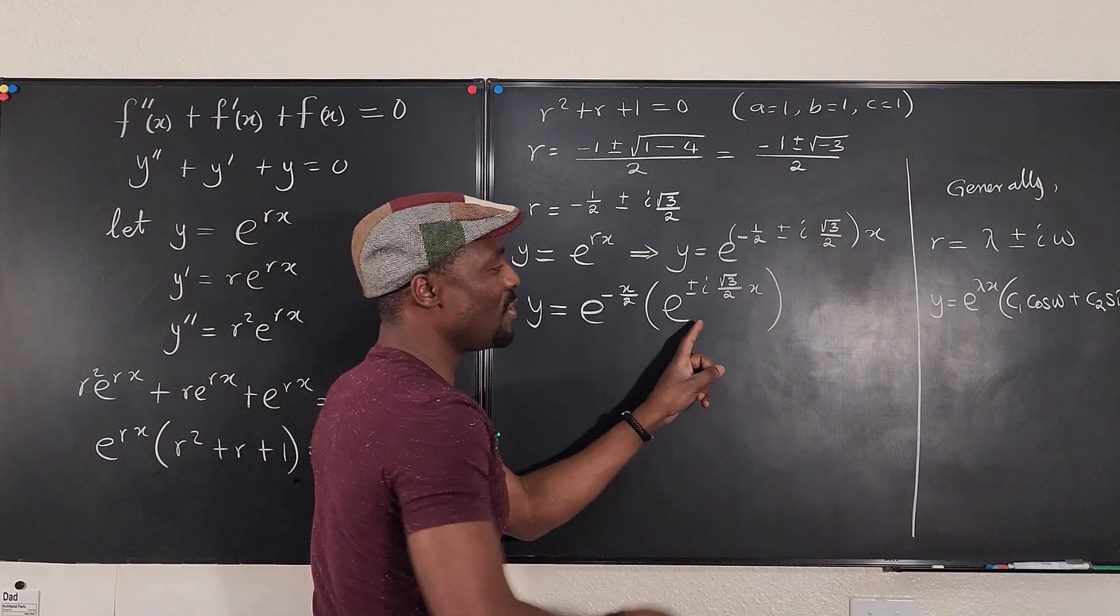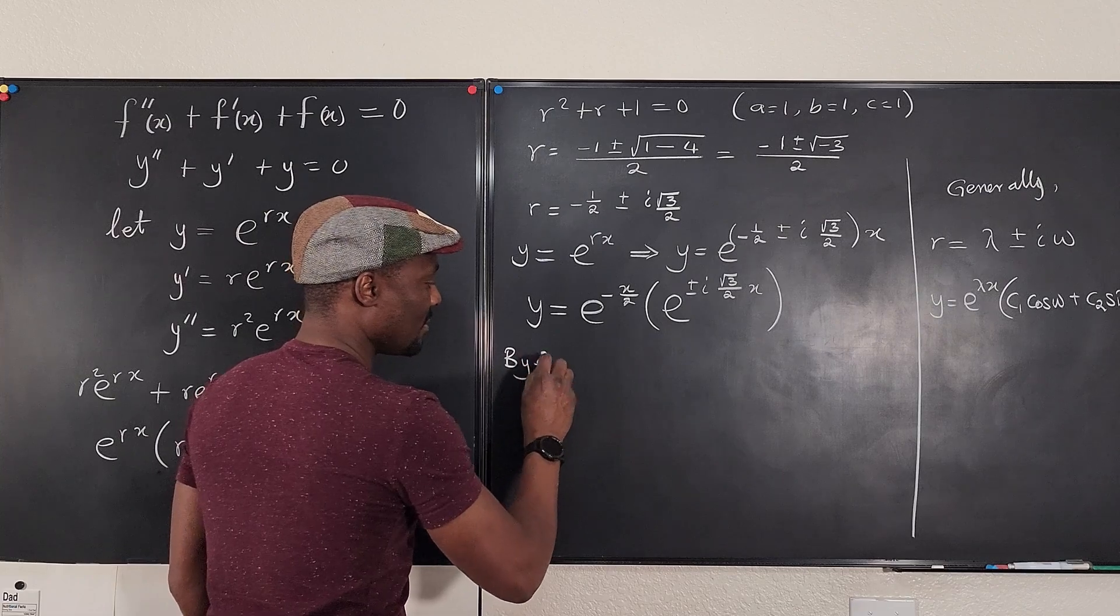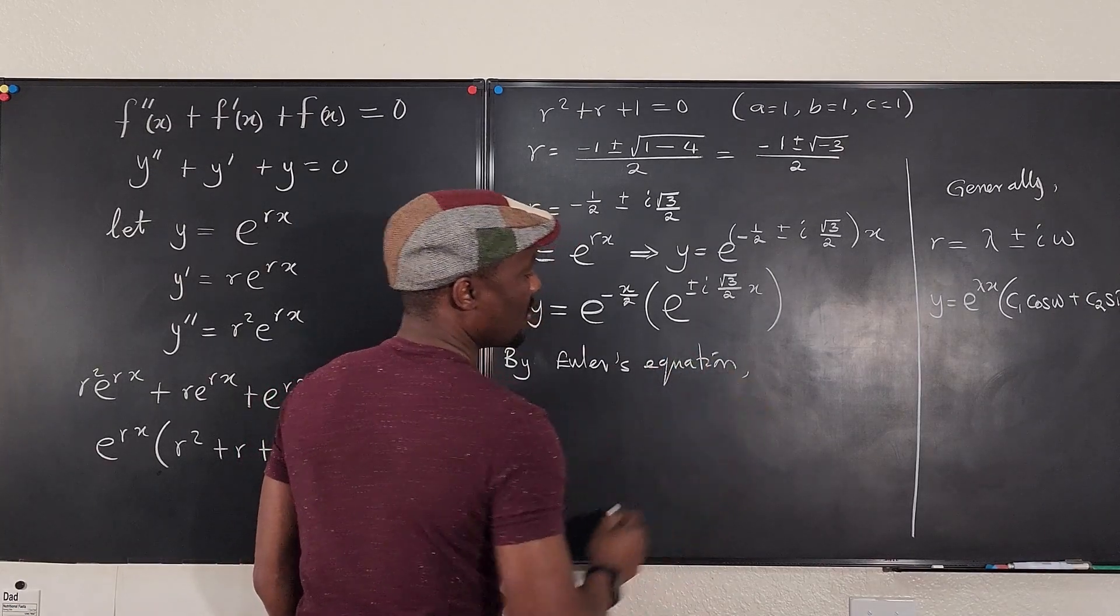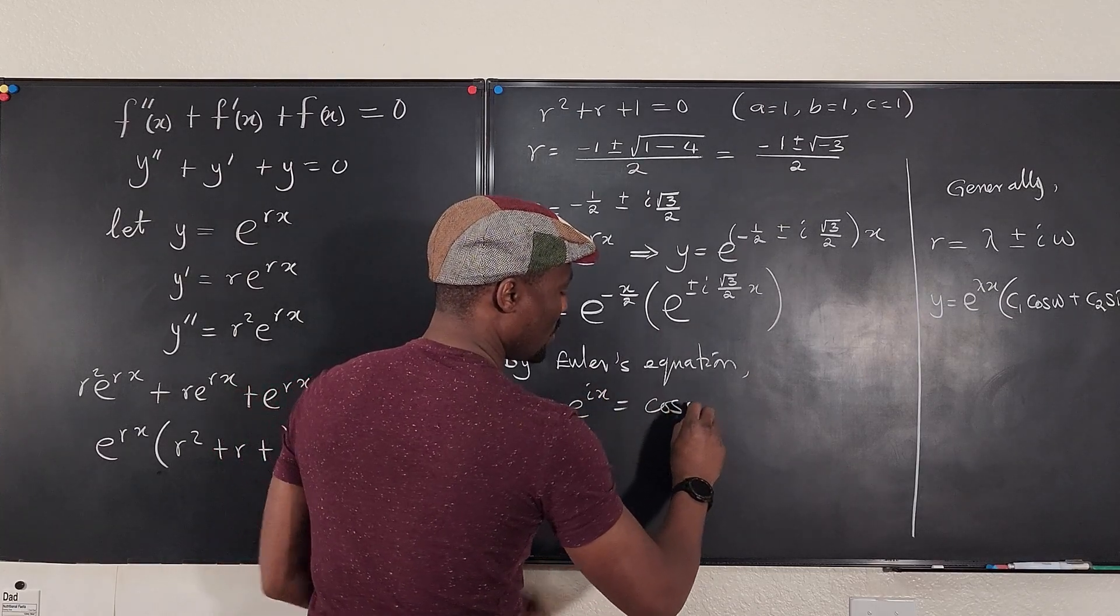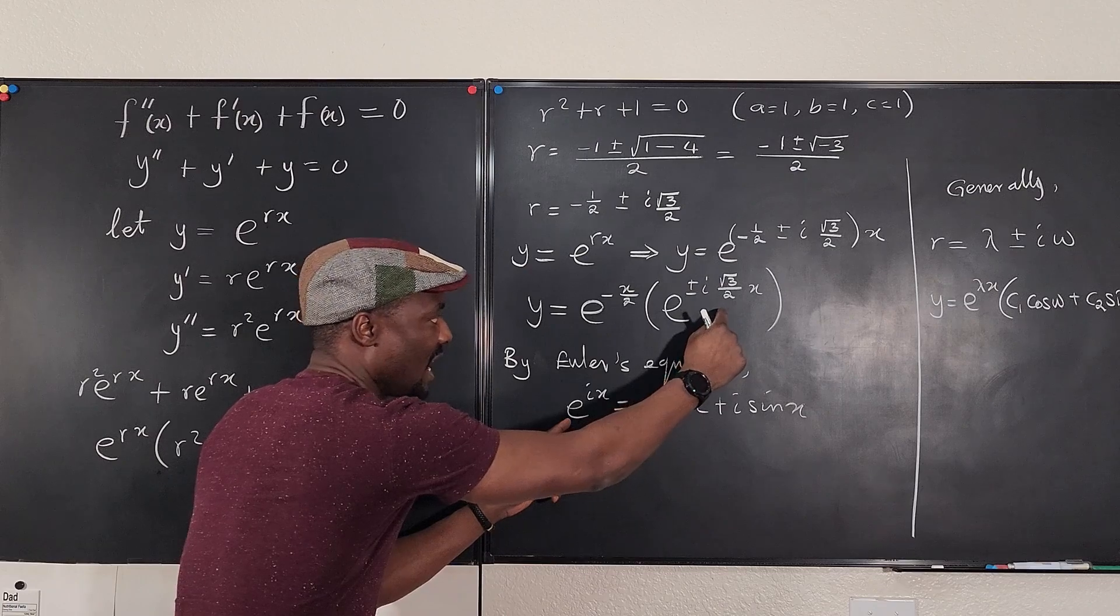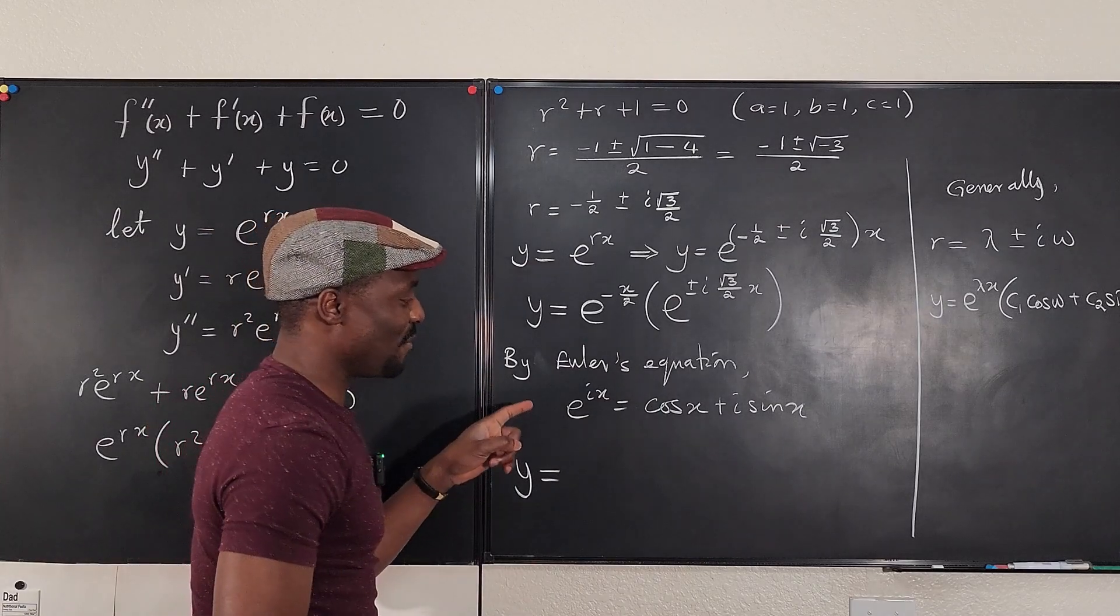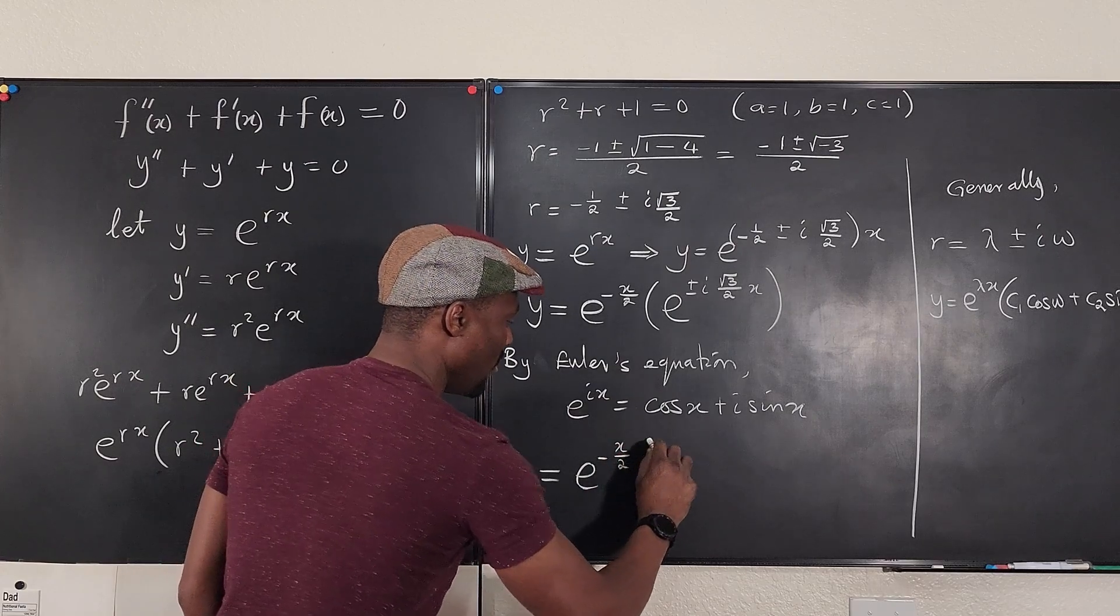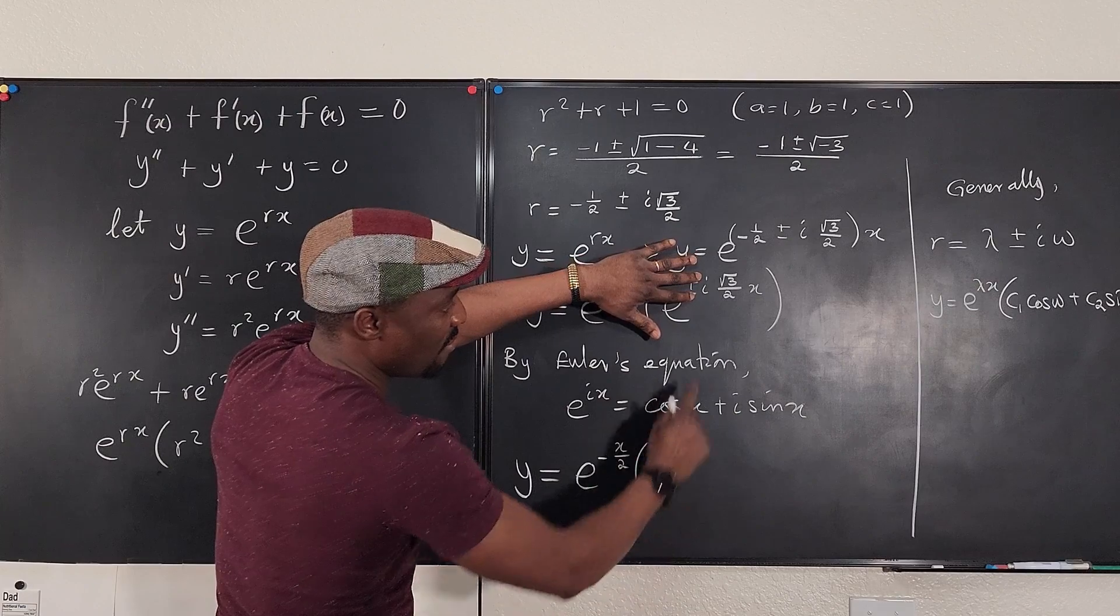And that's what I'm trying to show here. But remember that from Euler's equation, we know by Euler's equation, we know that e to the i x is equal to cosine x plus i sine x. And it is on this basis that we're going to transform this side so that our general formula, your y, will be equal to, I hope I have not confused anyone, will be equal to this part, e to the negative x over 2 multiplied by, we're going to apply this to this. Don't worry about the plus or minus, but let's just take this.